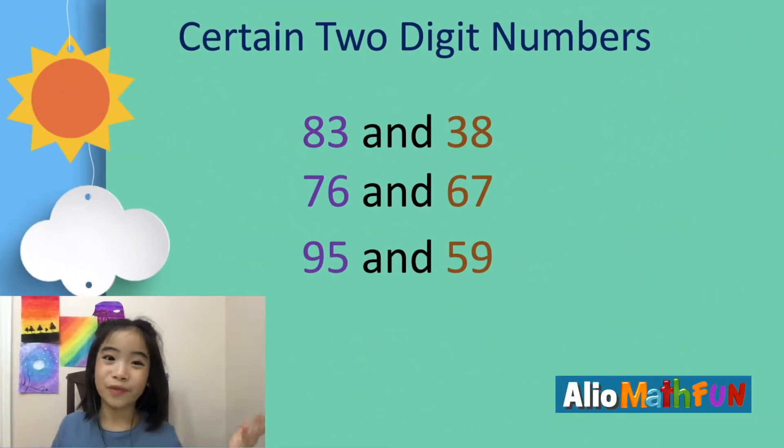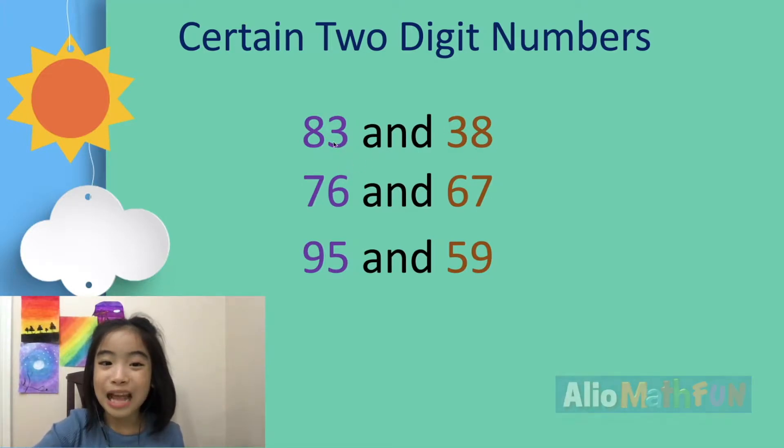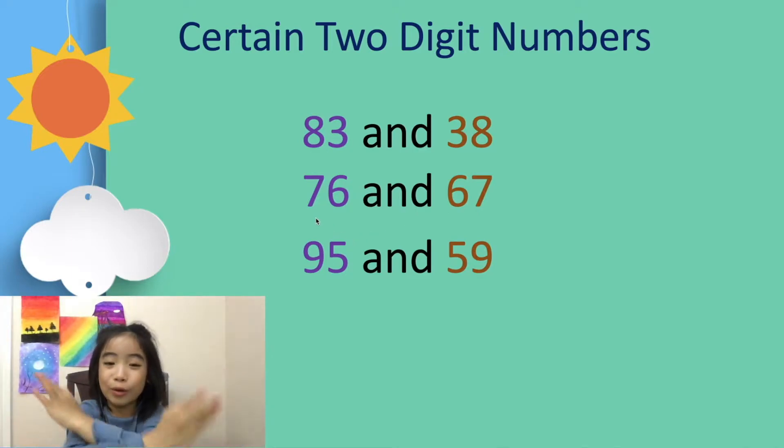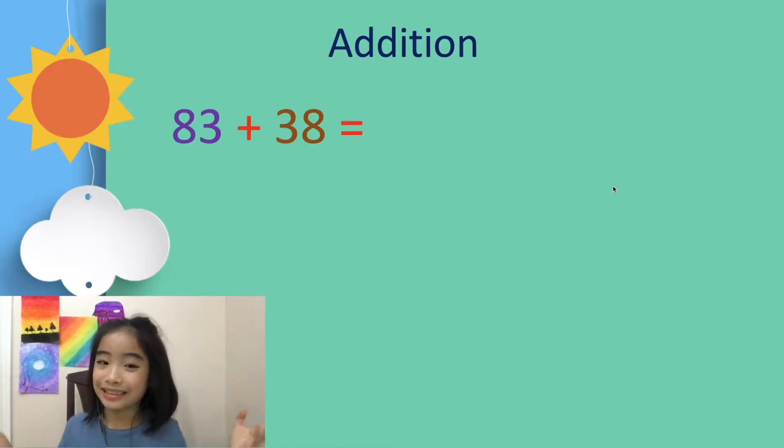This trick works for certain two-digit numbers. Here, the trick works for 83 and 38. Do you see the pattern? First, we have 83. Then, we switch the order to get 38. And it also goes with 76 and 67. We switched the order to get 67. And it also goes with 95 and 59. Now, let's learn the trick.